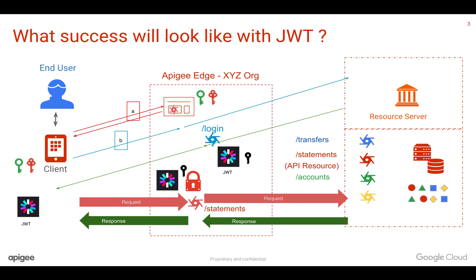You can compare an OAuth 2.0 access token, which is an opaque token that we discussed last time, with a JWT token. You can also use a JWT token as an OAuth 2.0 token. We are going to see it in action in future videos.